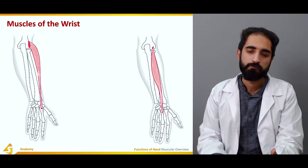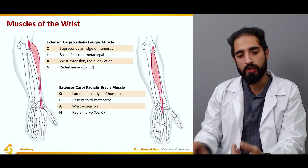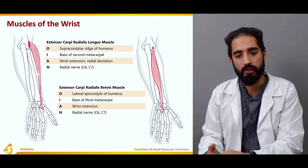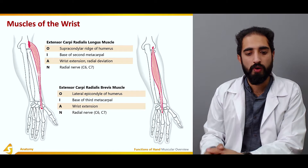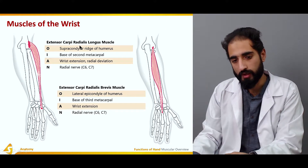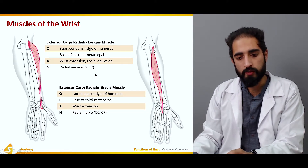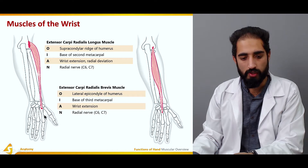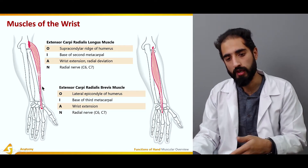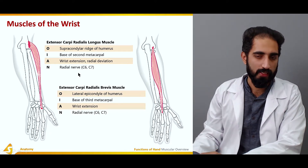Moving on to the extrinsic extensors: we have the extensor carpi radialis longus and extensor carpi radialis brevis — named for their relative lengths. Both attach proximally at the lateral epicondyle of the humerus, though the longus specifically originates at the supracondylar ridge. The longus inserts at the base of the second metacarpal and is involved in wrist extension and radial deviation. It is supplied by the radial nerve, with nerve roots C6 and C7.